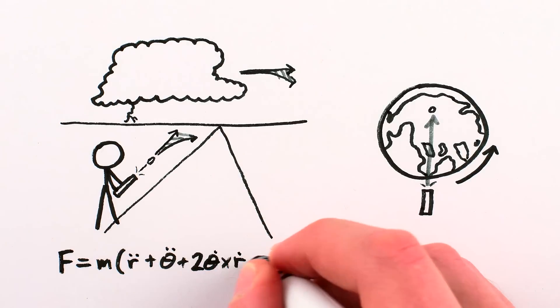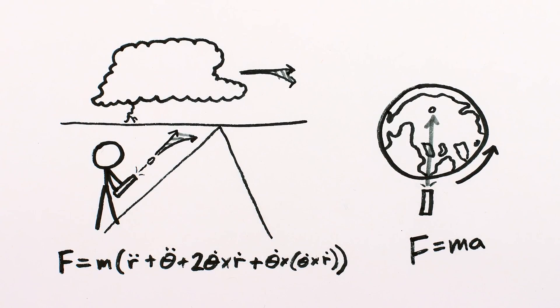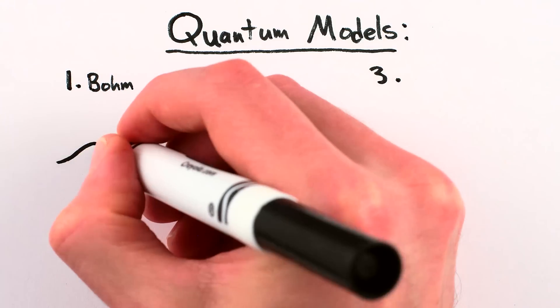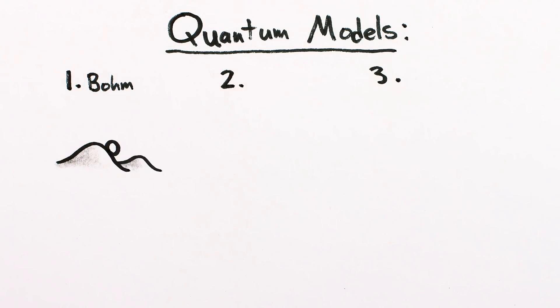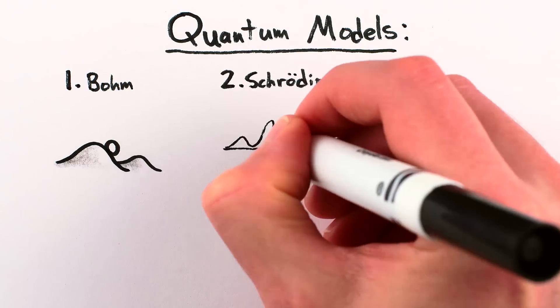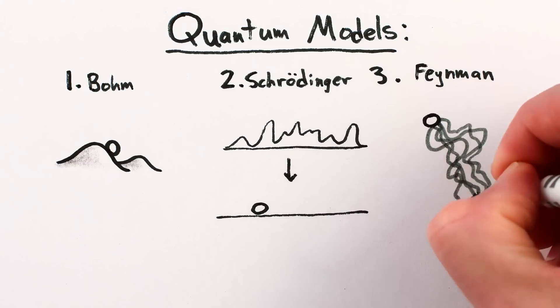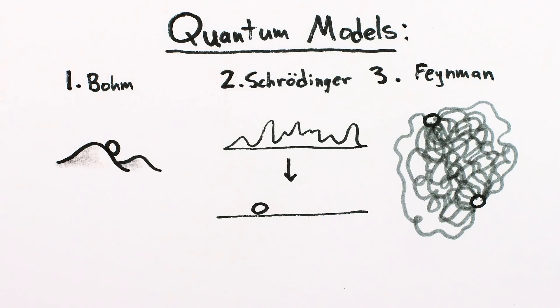Both models, if you use them carefully, make correct predictions about reality. And quantum phenomena can be modeled in at least three different ways that all give the same predictions. As a particle being guided by a spread out pilot wave, or as a spread out probability wave that collapses to a single point, or as a particle exploring all possible paths it could take and interfering with itself along the way.